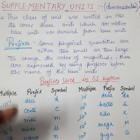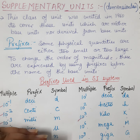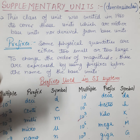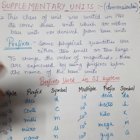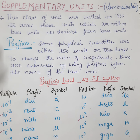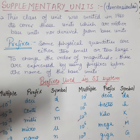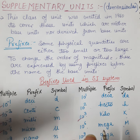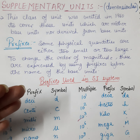The next topic is prefixes. Some physical quantities like mass, weight, volume, and temperature are either too small or too large. To change the order of magnitude, these are expressed by using prefixes before the name of the base units.